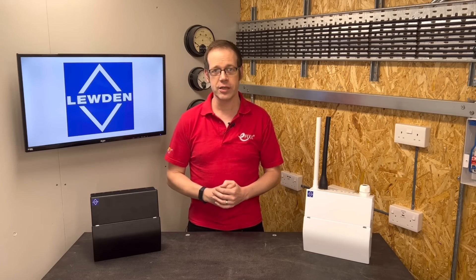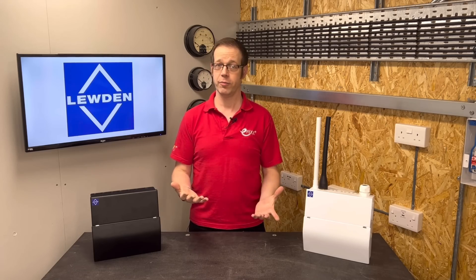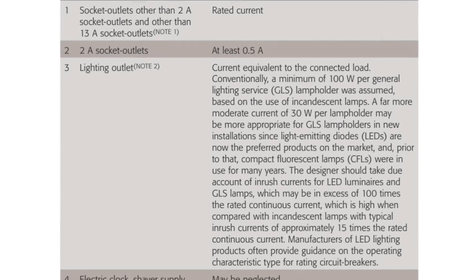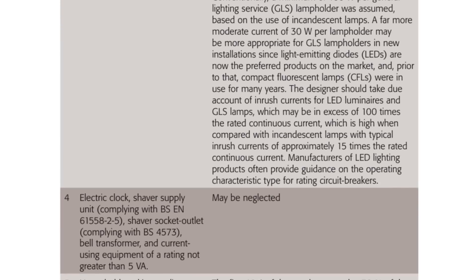So finally that value of 100 watts per lamp holder is out the door, now taking account of the reduced power ratings of LED lighting by suggesting an allowance of 30 watts per lamp holder. Personally I think this is still excessive, but that's the suggested value. The rest of that section points out that caution needs to be taken due to inrush currents on LED fittings, though to be fair this is more directed at commercial and industrial installations.